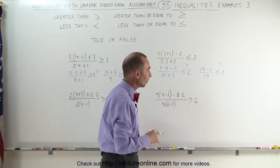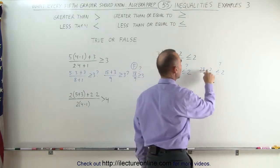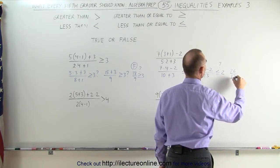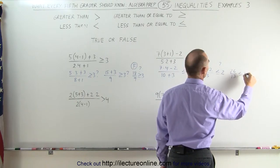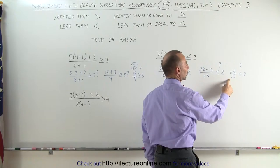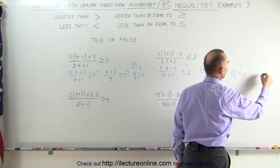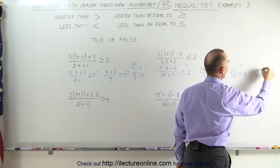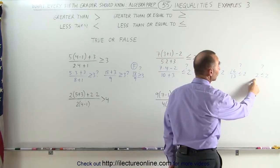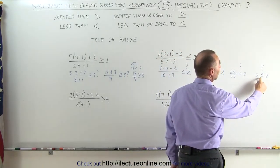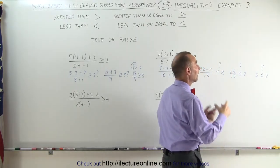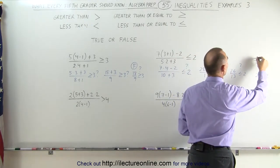We still can't tell for sure, so let's continue. 28 minus 2 is 26 divided by 13. Is that less than or equal to 2? We can tell that 26 divided by 13 equals 2. Is 2 less than or equal to 2? The answer is yes. Even though 2 is not less than 2, it is equal to 2, and if one of the two conditions is correct, we call this a true statement.